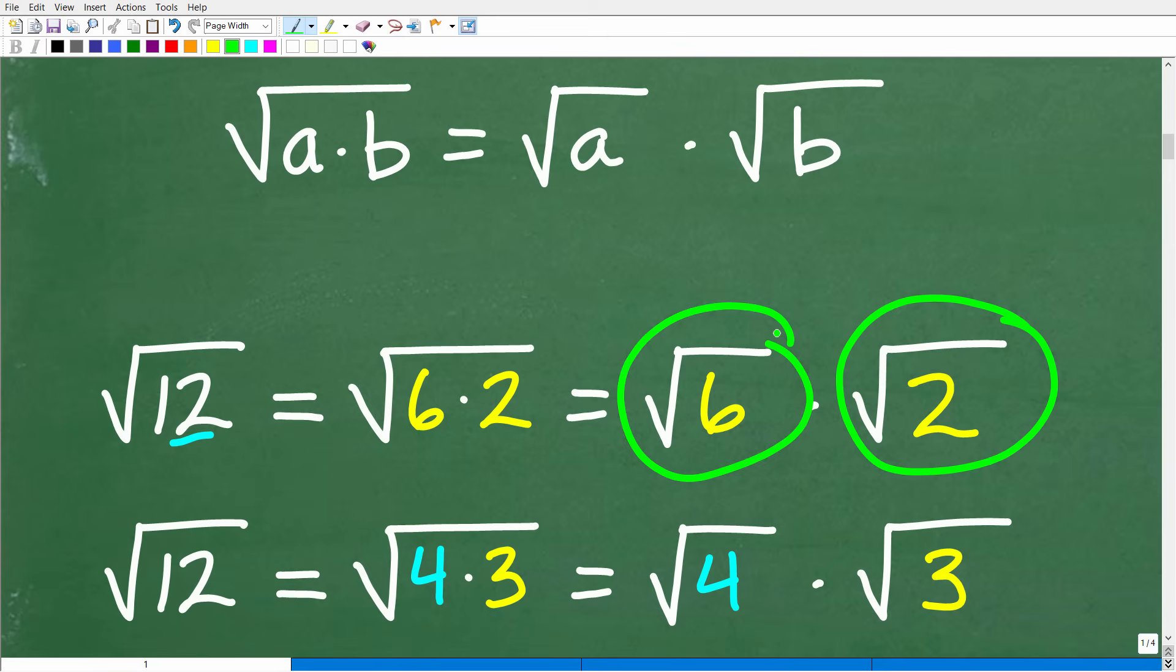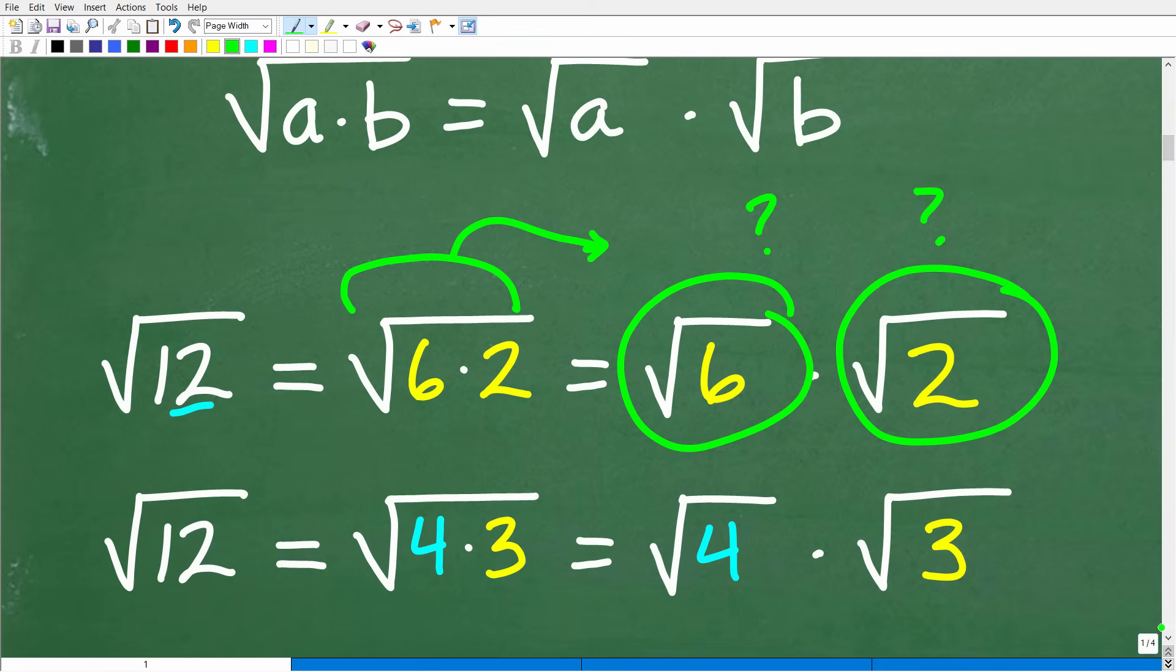So this is totally legal, totally fine, and a good thing to do. But really, this is not helping us so much because the square root of 2 and the square root of 6, these numbers here are irrational numbers. In other words, I'm going to have to go into my calculator and get decimals. I don't really know what the square root of 6 is or the square root of 2 is. So this didn't really help me out, although this is correct.